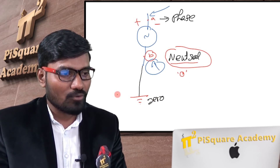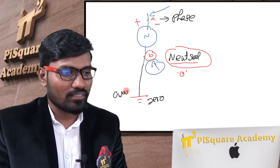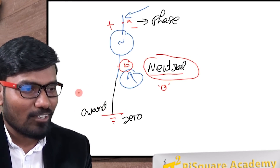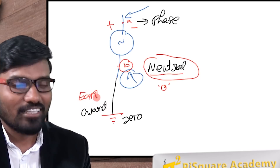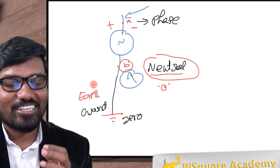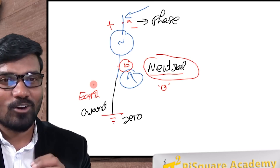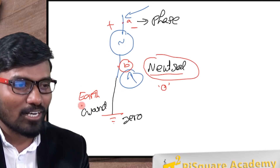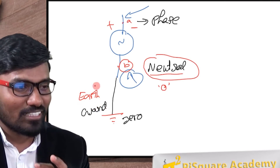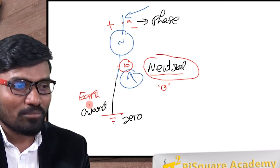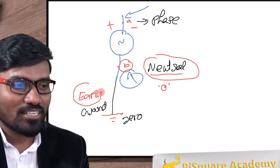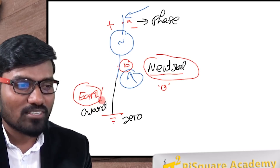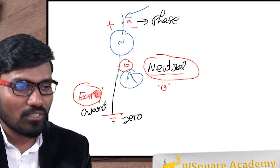This neutral grounding is also called an earth connection or earthing. In North American English they call it 'ground'; in British English they call it 'earth.' Basically, earth and ground are just synonyms — that's the first point to note.